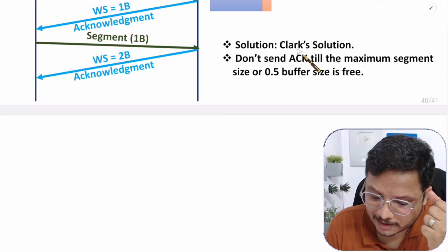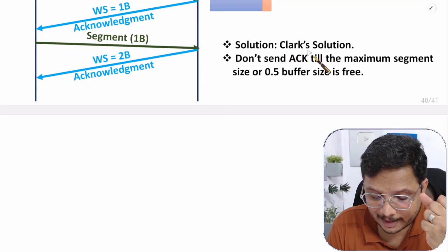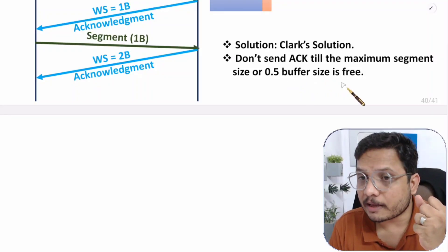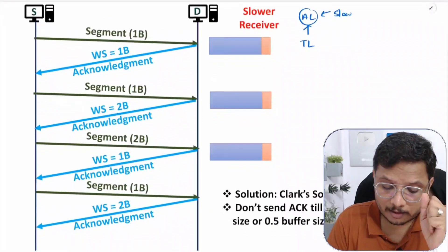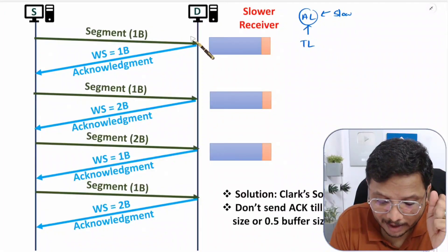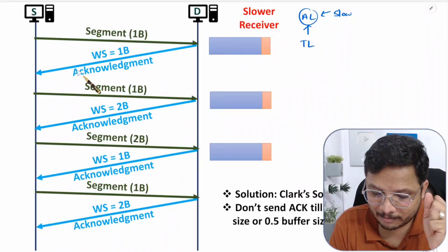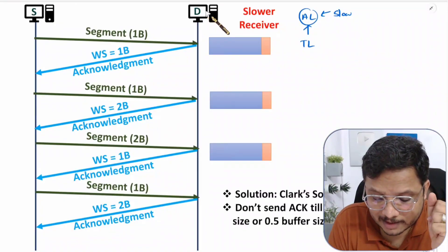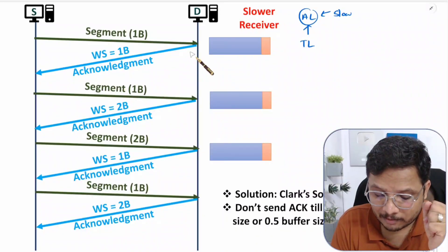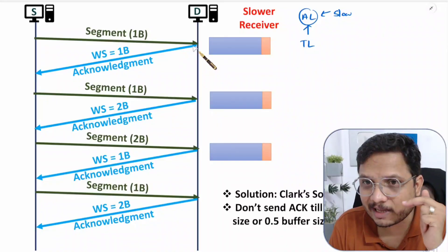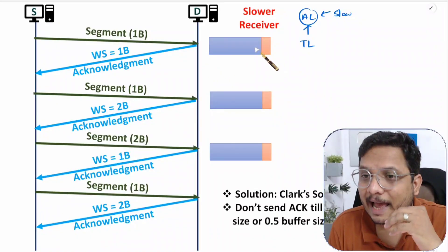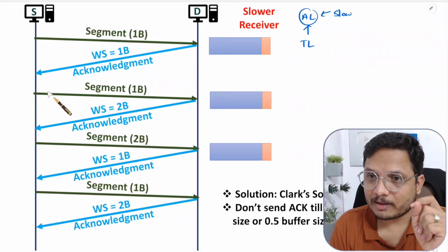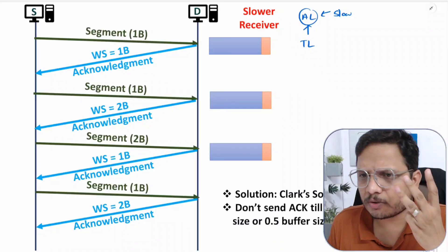Because the receiver is slow, this is also referred to as silly window syndrome. The solution is Clark's solution. Clark says: do not send an acknowledgement until either the maximum segment size or half of the buffer size is free. So the receiver should wait before sending an acknowledgement. It should wait until the window is getting empty or at least half of the window is empty before sending acknowledgement.